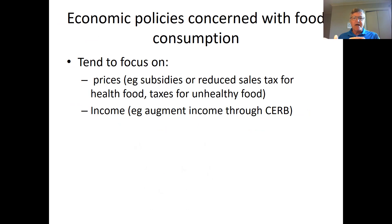If we want people to consume less of something, we might increase its price — for example, by putting a tax on it. That's why we talk about fat taxes or sugar taxes. If we want people to consume more of something, like dairy products, we might subsidize it or reduce sales tax — many places have zero sales tax on food. We might also think about changing income. When people are short of food during COVID-19 due to job loss, augmenting their income may be the primary way to increase their food consumption.